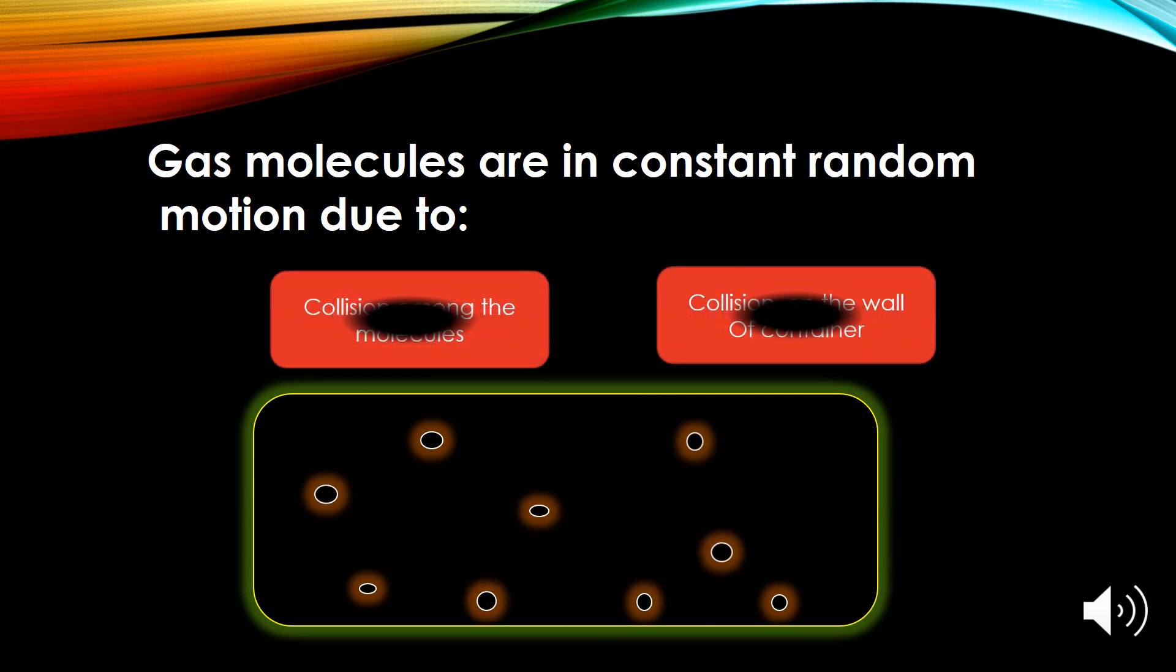Fourth point is gas molecules are in constant random motion and this motion is due to the collision among the molecules and also the collision on the walls of the container.